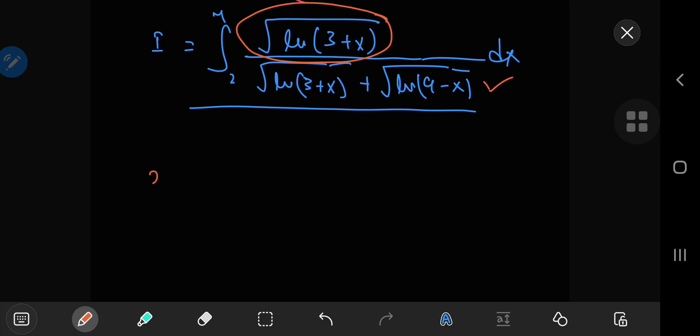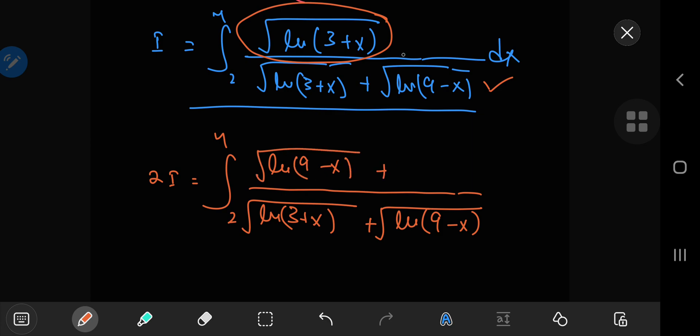So let's write this as 2 times i equals the integral from 2 to 4, common denominator: natural log of 3 plus x in the square root, plus natural log of 9 minus x in the square root. And up here I have natural log of 9 minus x in the square root, plus this term here, the square root of the natural log of 3 plus x. And things cancel out quite nicely here.